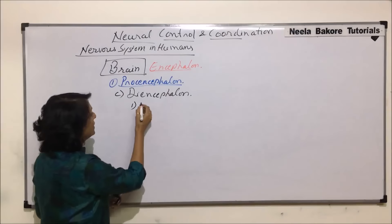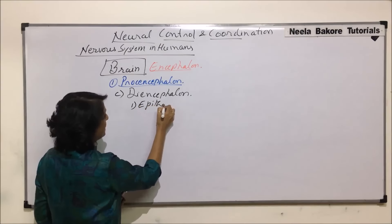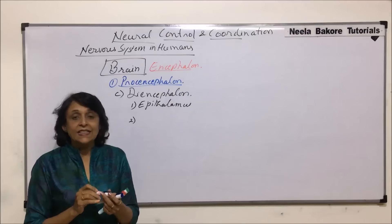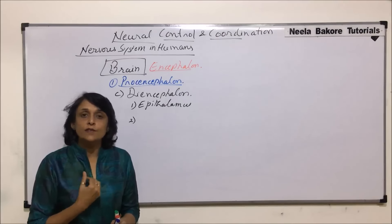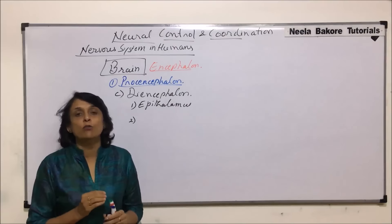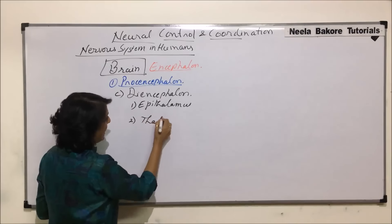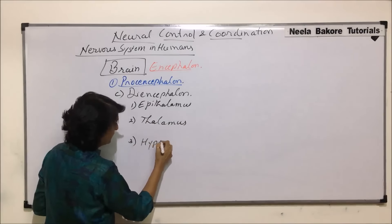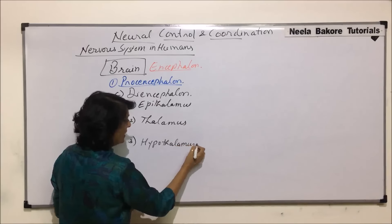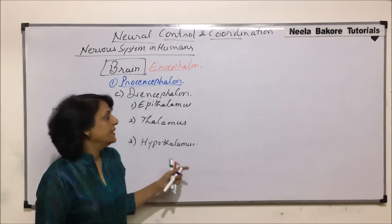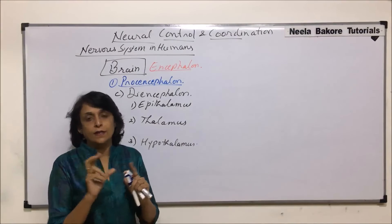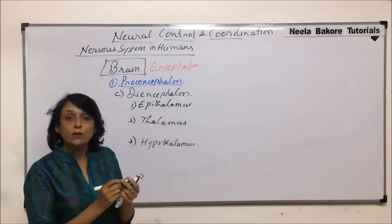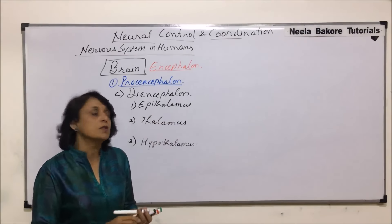The roof of diencephalon is known as epithalamus. There are two bodies which are parts of grey matter embedded in the white matter, known as thalamus. Below thalamus is present hypothalamus. To understand this structure, we'll draw a diagram showing the connection between diencephalon and other parts of the brain, as well as the connections between the ventricles.